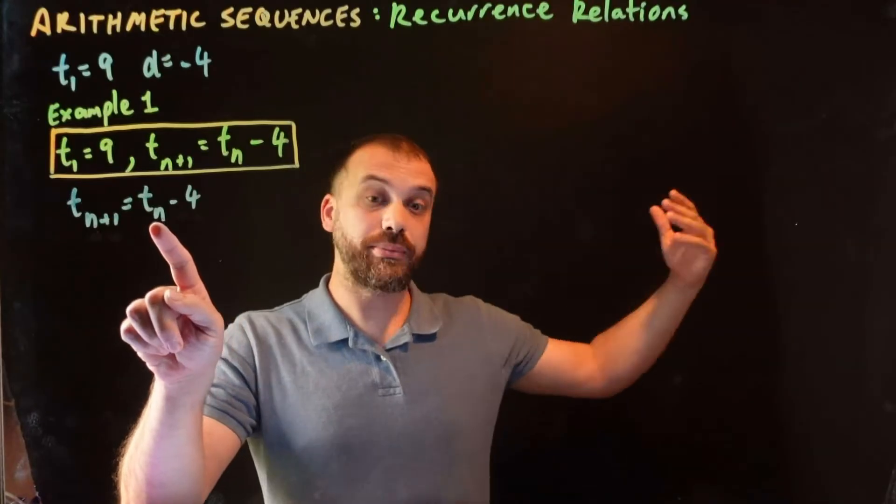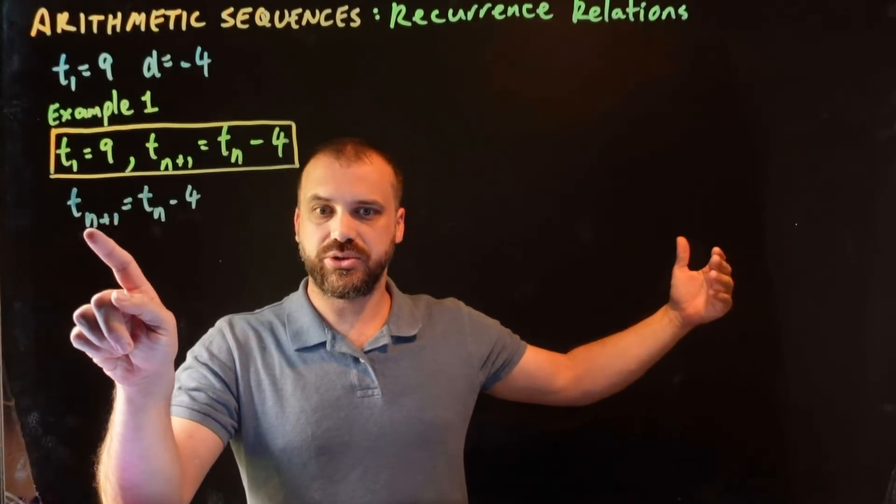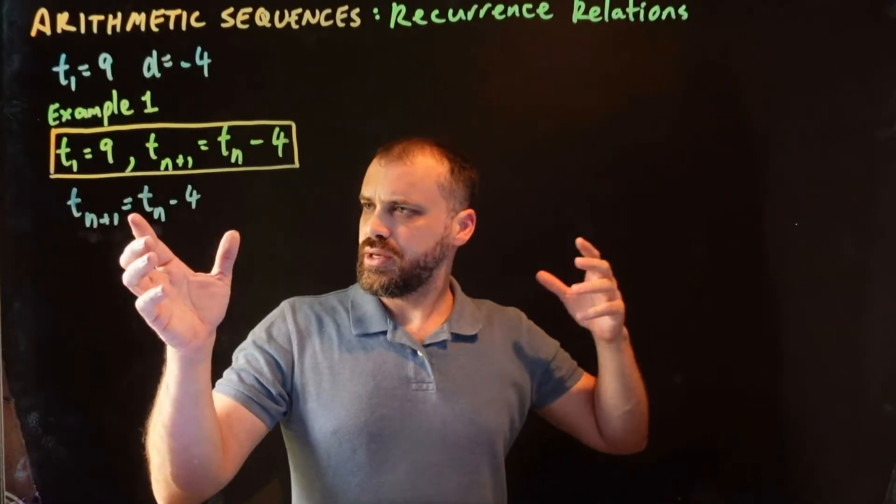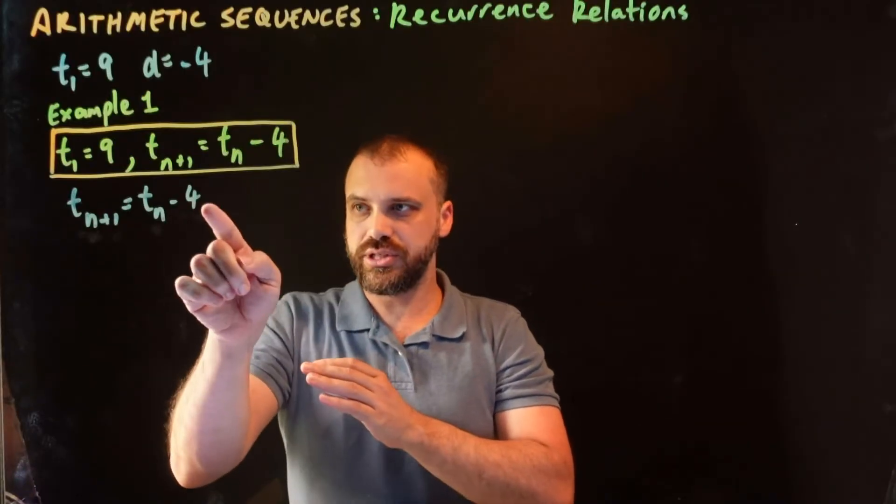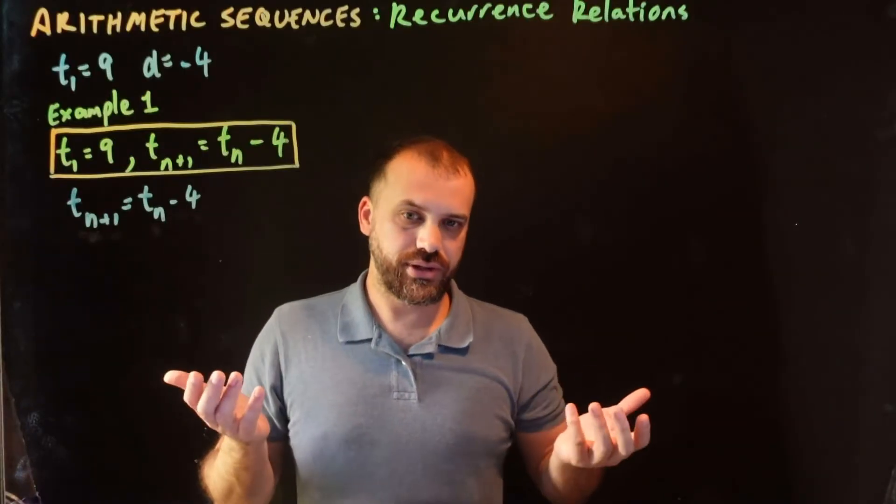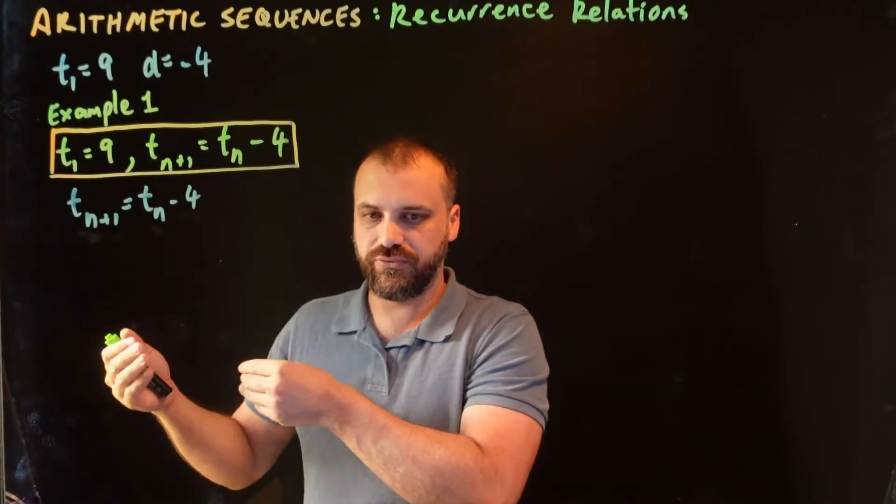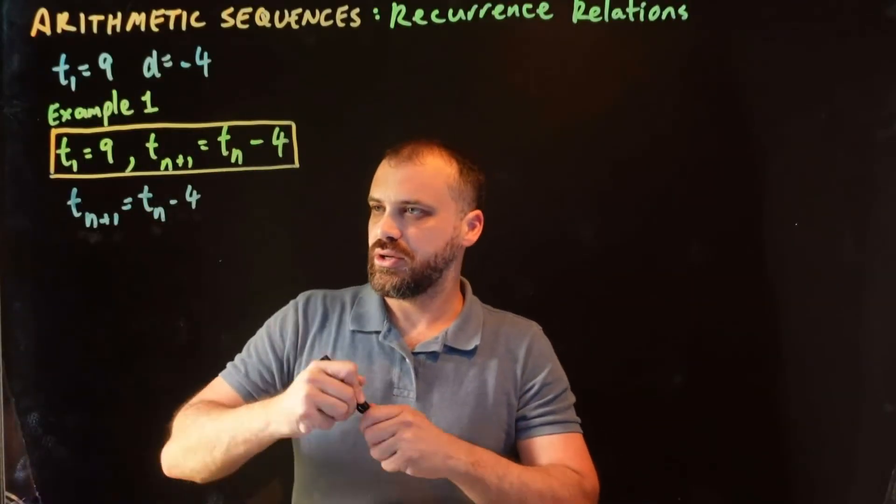Because if this term was term 1 million, and this term is 1 more than that, that means that's the 1 million and 1st term. That's what this formula does. If you know this term, do something to it, and you'll know the next term. How do we start using this recurrence relation formula to find the terms in our sequence?